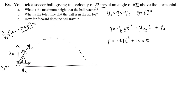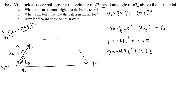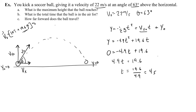From the graph, the ball returns to a height of 0 at t = 4 seconds. We can also solve algebraically: set y = 0, factor out t to get −4.9t = −19.6, and dividing gives t = 4 seconds. The ball is in the air for 4 seconds.